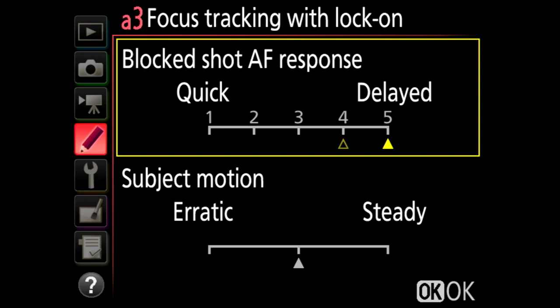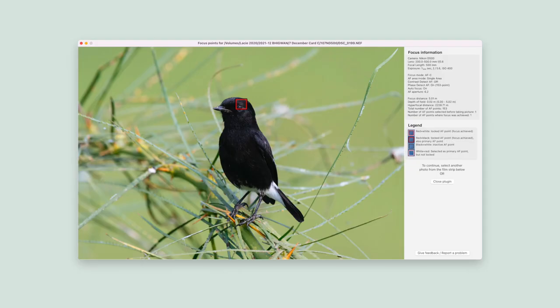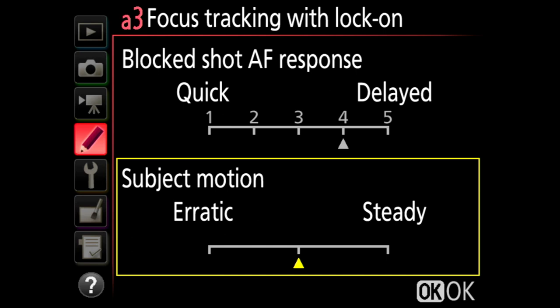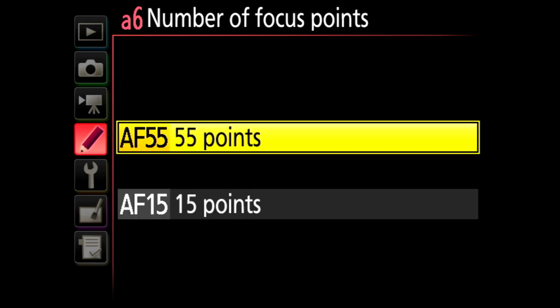I always have my autofocus area set to single point, and I choose one of the 35 cross-type points as per my composition, aligning the eye of the creature on that point. I want my focus locked on the eye at all times. That's why I set the tracking sensitivity to delayed — four or five — so that if another bird, a tree, or something else momentarily overlaps with my focus point, the focus will not shift from where I set it.